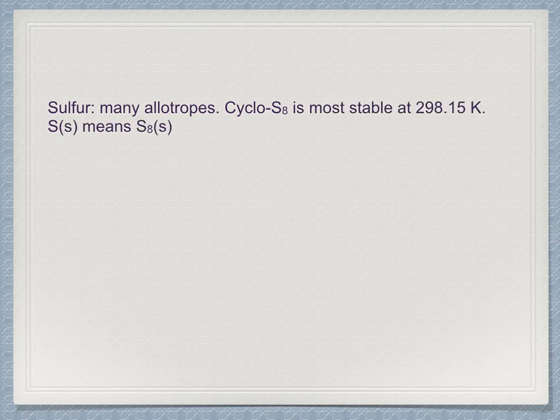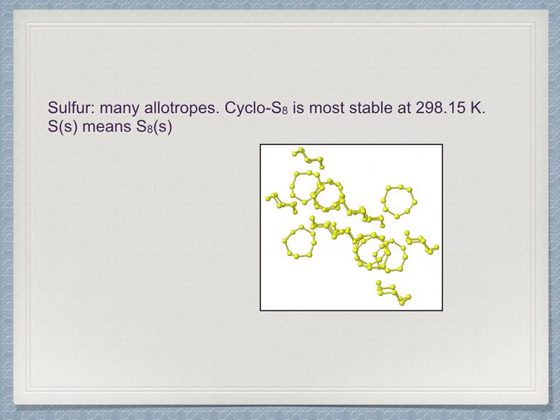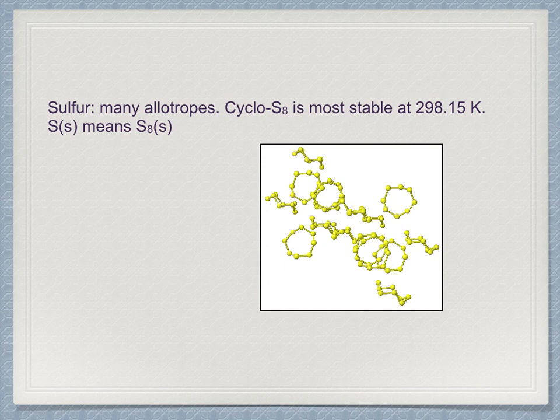Sulfur is perhaps the most complex solid element — it has some 30 known allotropes. At 298.15 Kelvin, it is a yellow solid known as alpha sulfur. It is made up of 8 sulfur atoms formed into a ring, with 16 rings crystallizing into the orthorhombic lattice of the alpha sulfur unit cell. This same material is sometimes called octosulfur or cyclo-S8. Some people will write its reference state as S solid, meaning alpha sulfur; others may write S8 solid and mean the same thing. You can use either, but you need to work out the stoichiometry differently in each case.